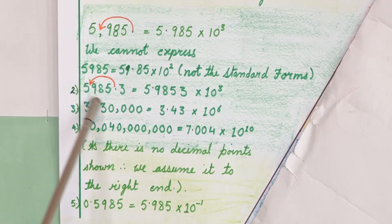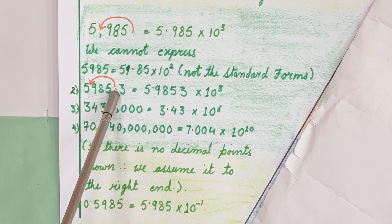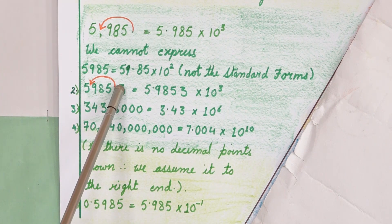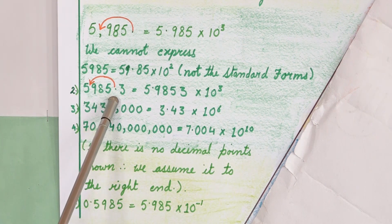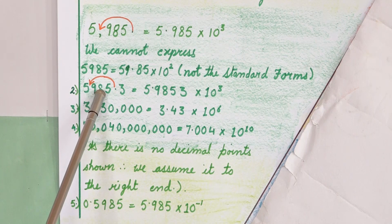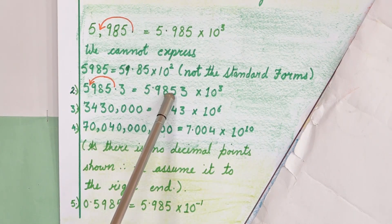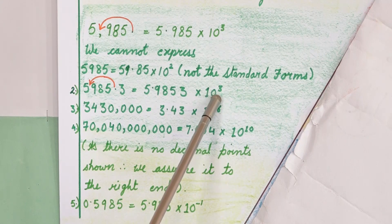Now consider this example. If you see this example, in this example my decimal point is here. But if I have to write this as a standard form I have to shift this decimal to this side. How many places I have shifted? 3 places. So it will become 5.9853 multiplied by 10 raised to the power 3.